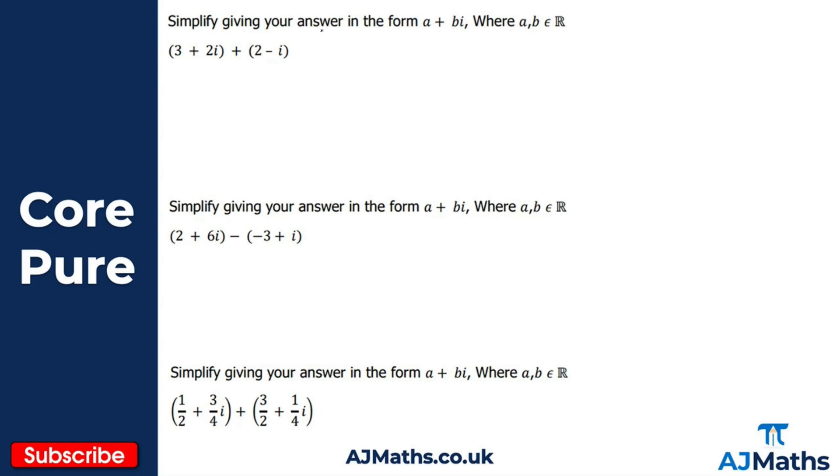What we mean by that, if we take a look at this first example here, is we add the real parts together separately. So 3 plus 2 gives me 5, and then 2i plus minus i would simply give me i. That gives us our new complex number there.